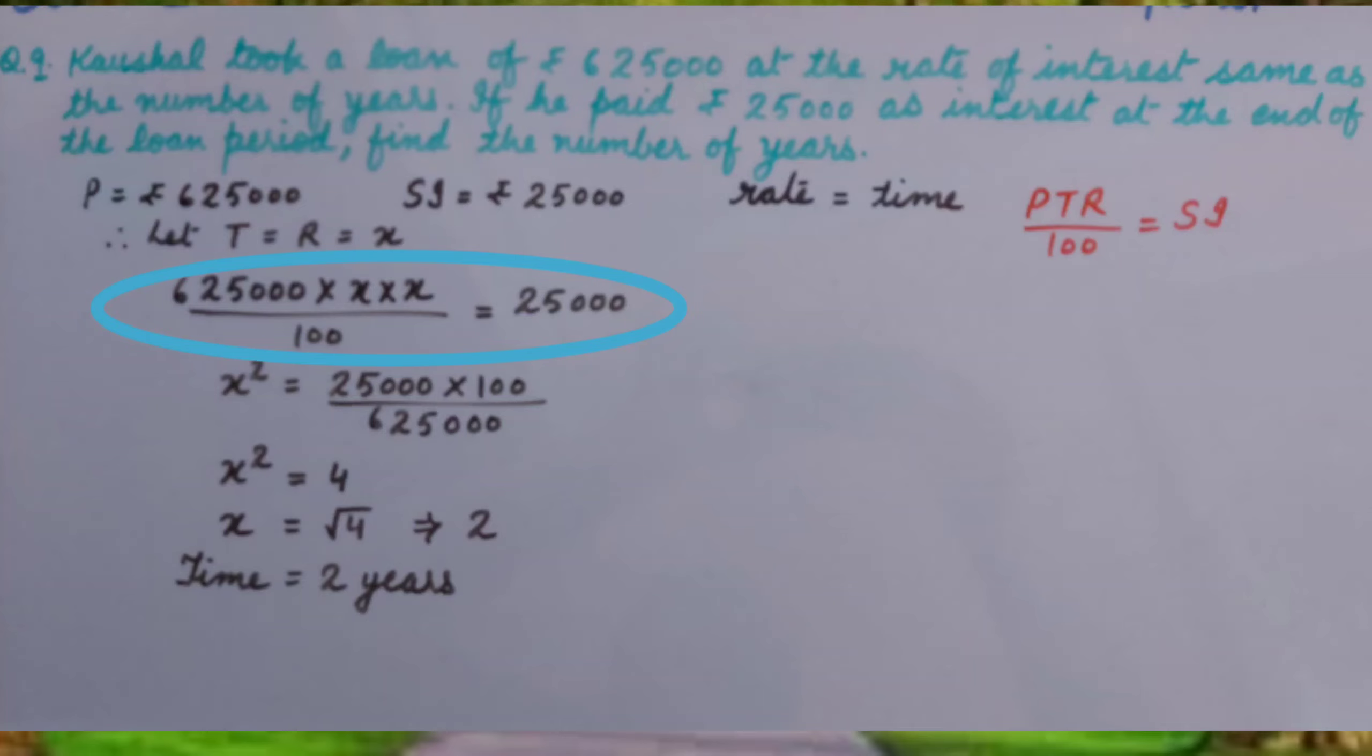Solving, we get x² = (25,000 × 100)/625,000. Therefore, x² = 4, so x equals square root of 4, which is 2. This means the time is 2 years.